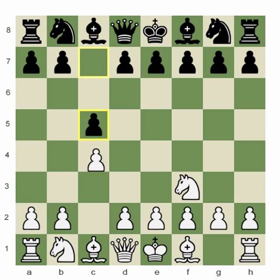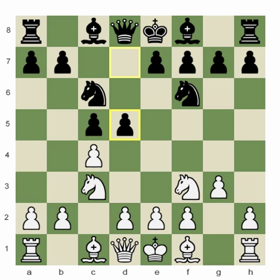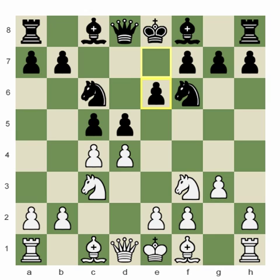The moves continued: c4, knight f6, knight c3, knight c6, g3, and here black played d5. Then d4, d4 taking on d5, d6, and now we've transposed into an opening that I've recommended for black and made some videos about on the site.